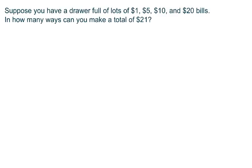So suppose you have a drawer full of lots of $1, $5, $10, and $20 bills, basically as many as you need, so there's no restrictions. In how many ways can you make a total of $21?